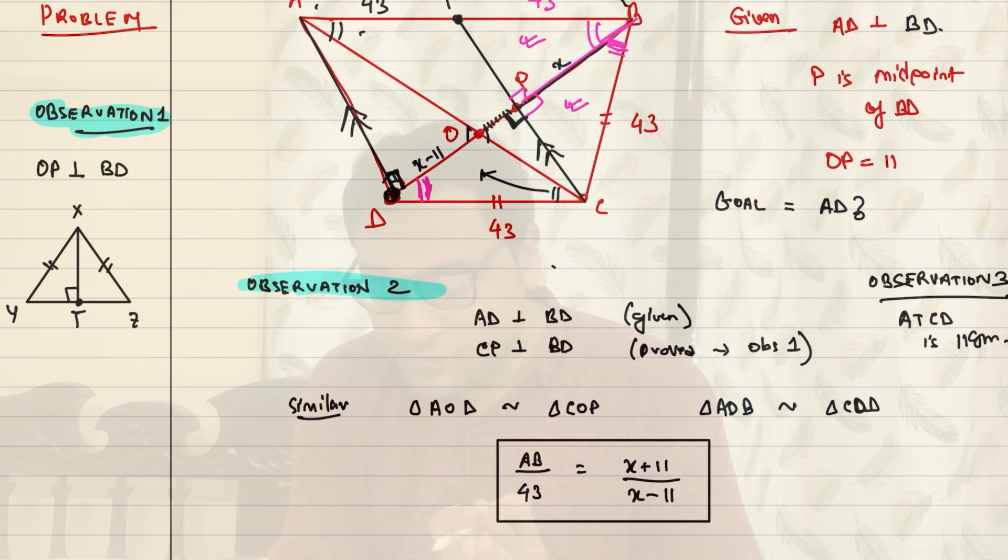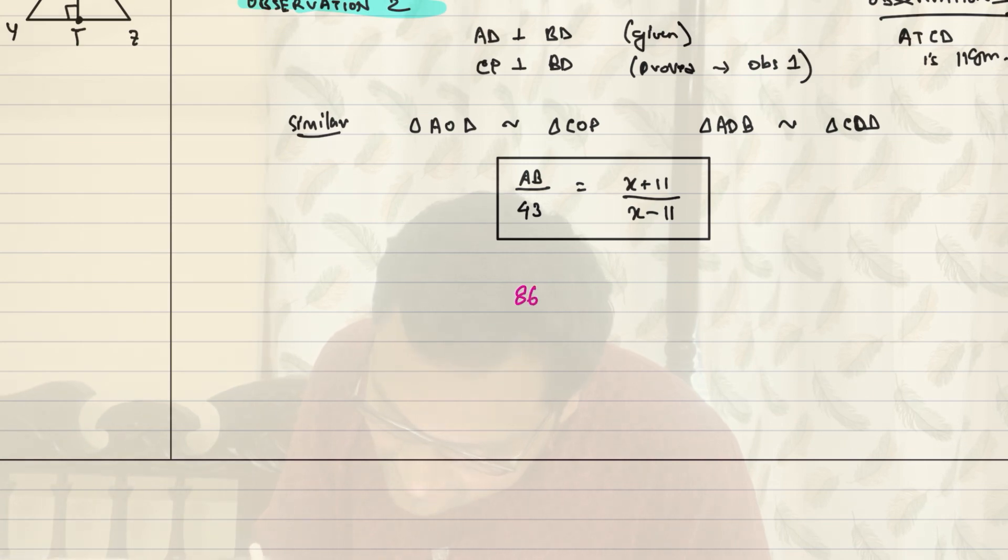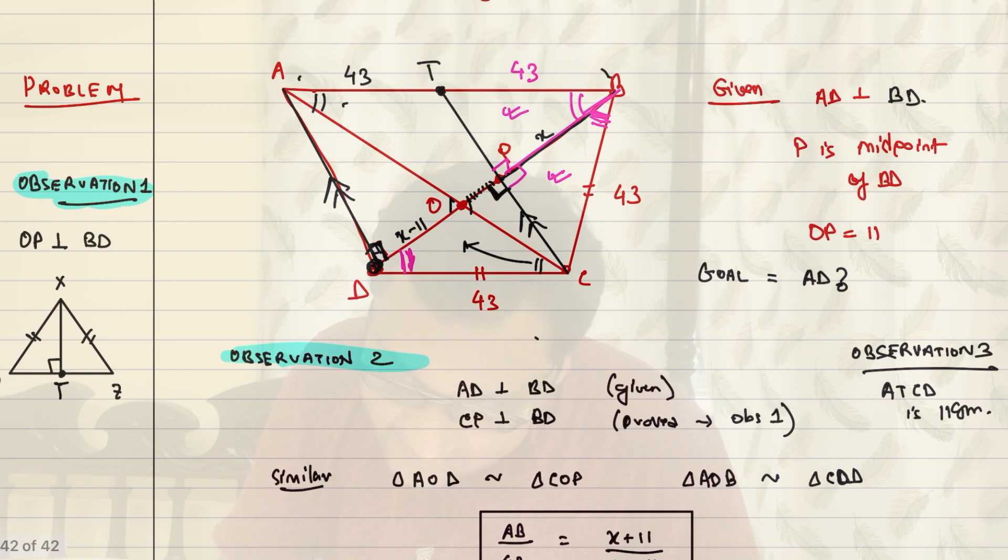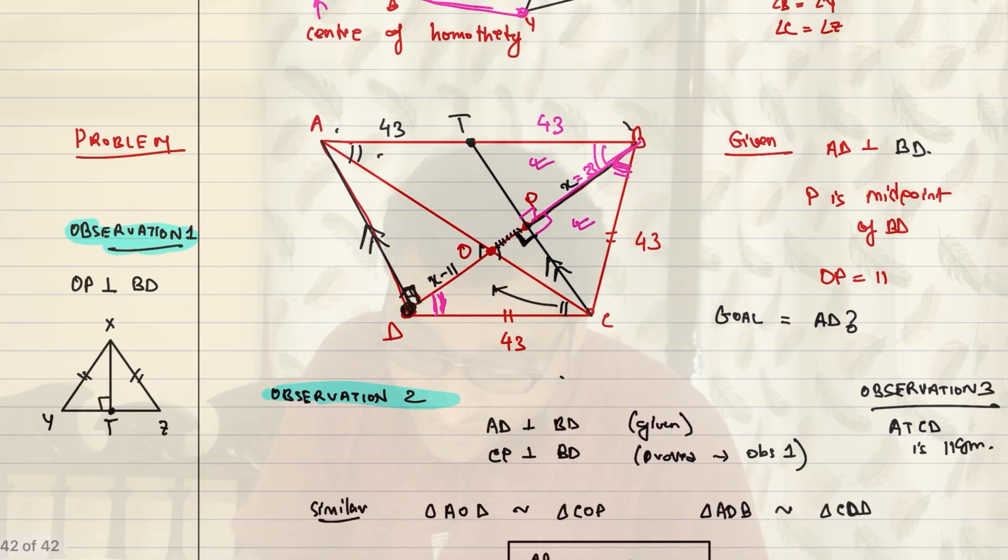So, that means, we have found AB. AB is 43 times 2, which is 86. So, 86 by 43 is X plus 11 by X minus 11. So, you just cancel it off. So, you have 2X minus 22 is equal to X plus 11 or X is equal to 33. So, this X is 33. So, what is the total length of BD? Well, it's double of X. So, BD is 66.